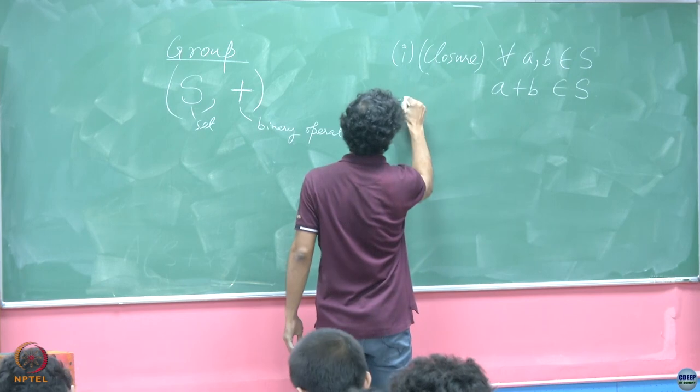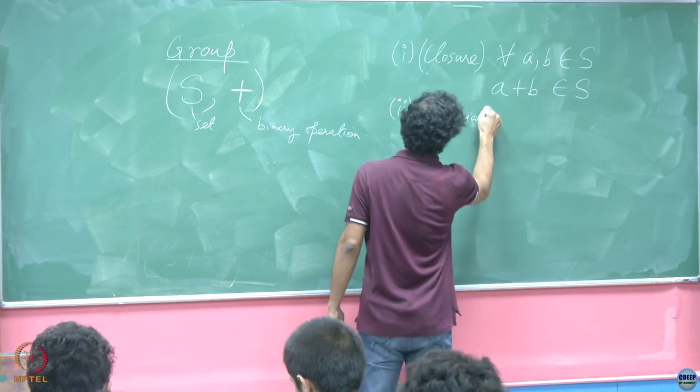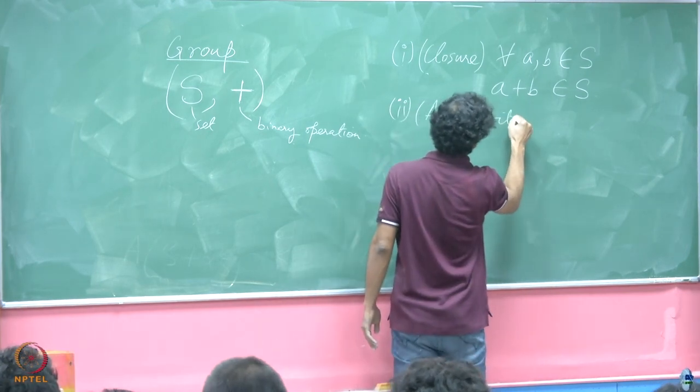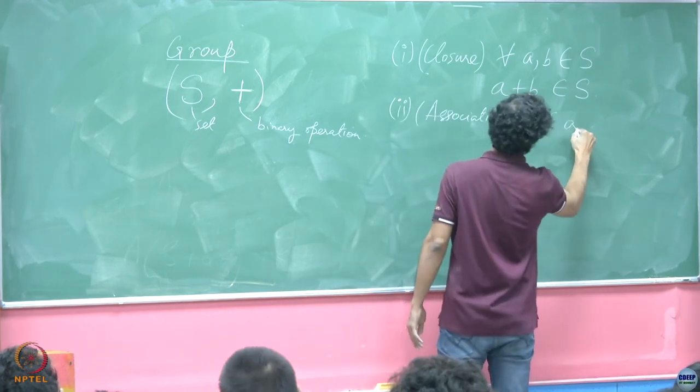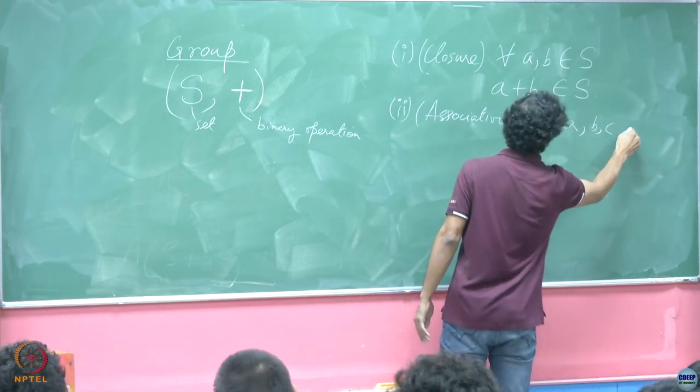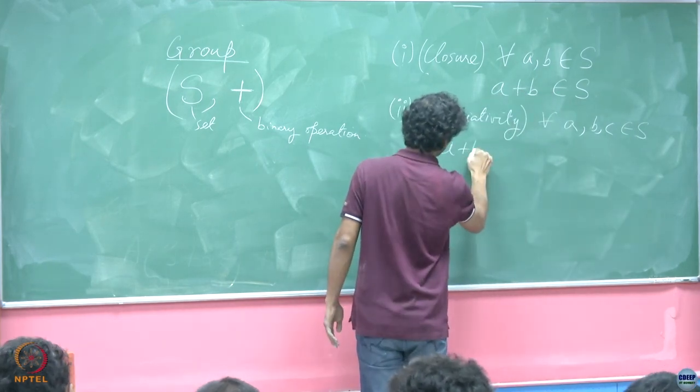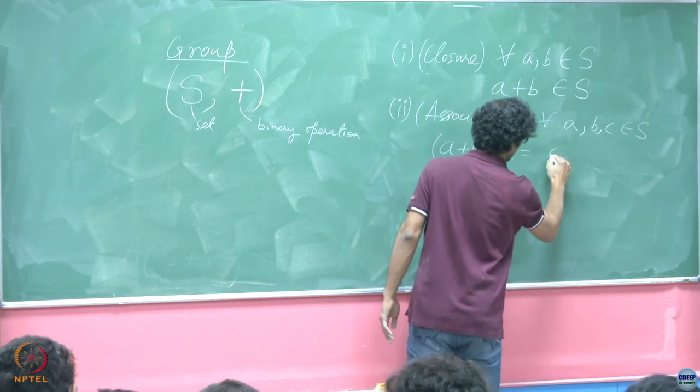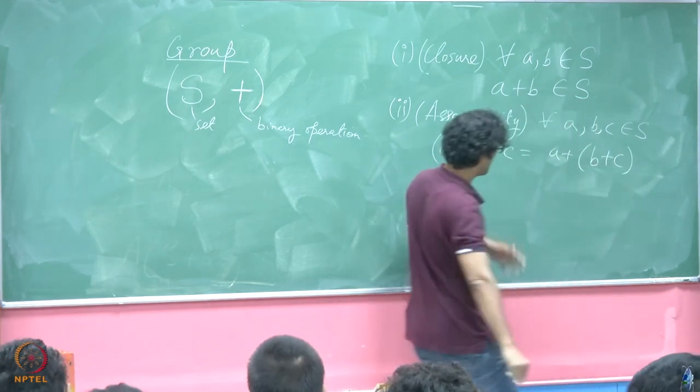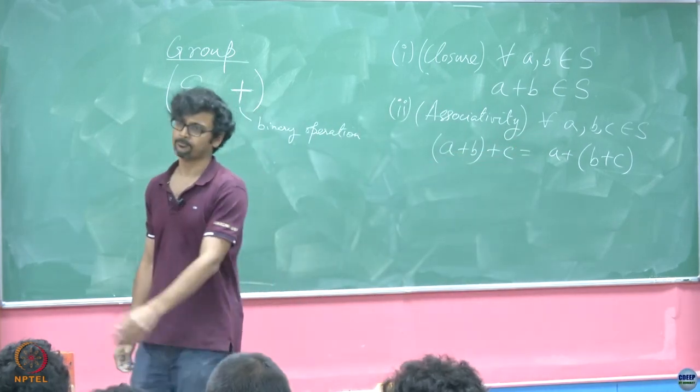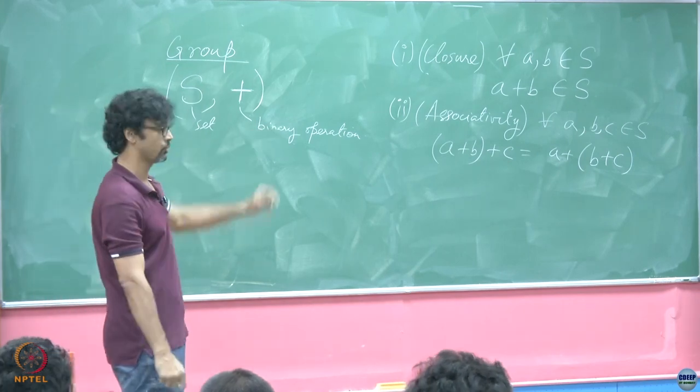Second is a property again you are familiar with is associativity which is when we say that for all A, B, C coming from the set S, it does not matter in which order you do the operation. It is all the same so that actually you can get rid of the bracket and be unambiguous about it. So, you have the property of closure, you have the property of associativity.